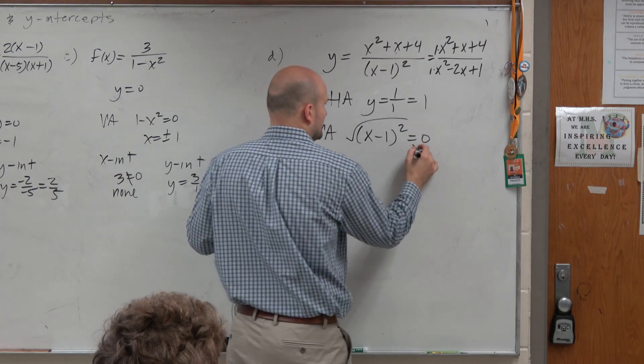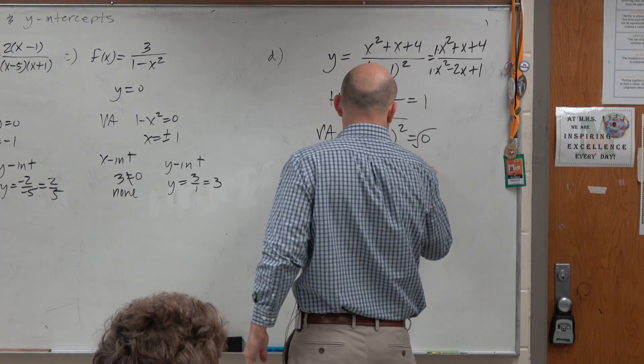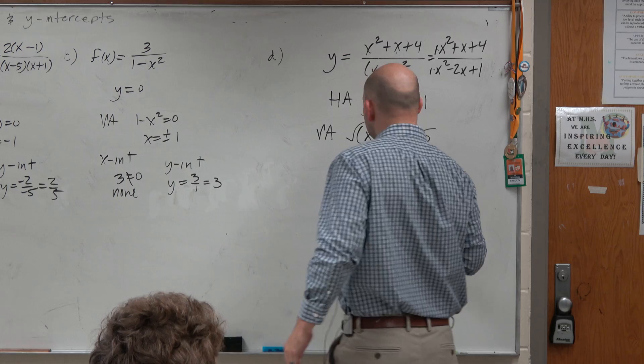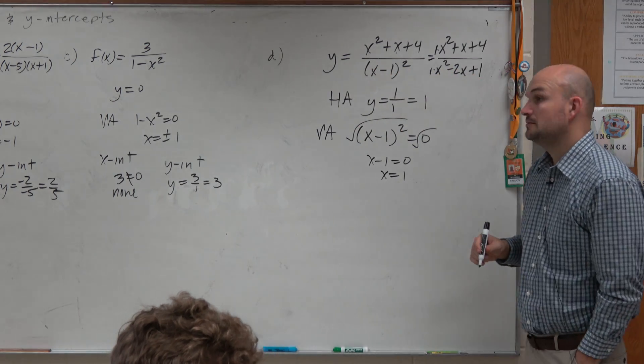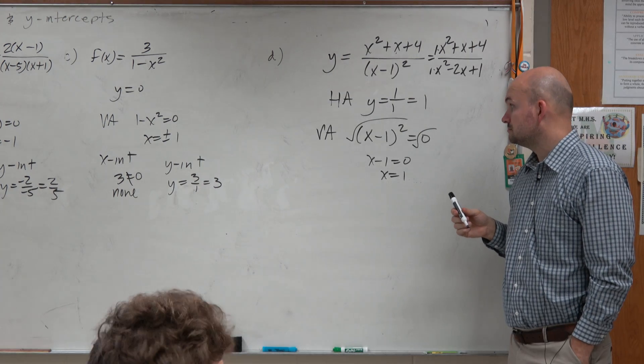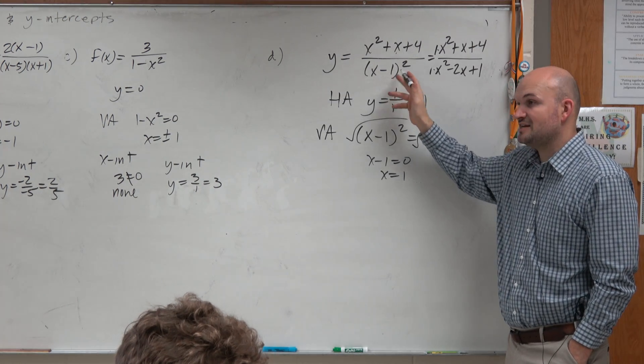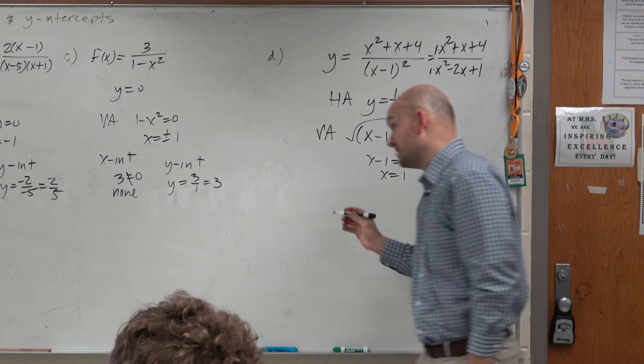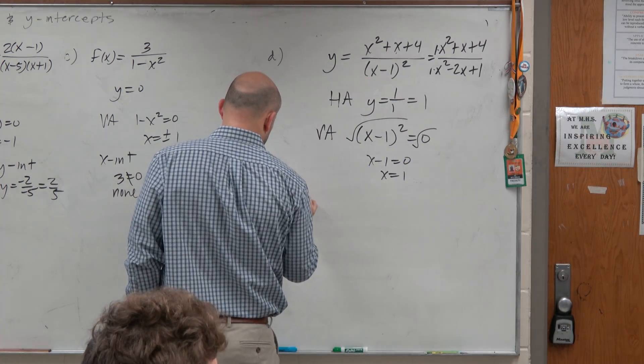So my vertical asymptote, I'll take the square root of both sides. (x - 1)² is equal to 0. x is equal to 1. Vertical asymptote is the values that make the denominator equal to 0. Be very careful with how you guys are doing this.